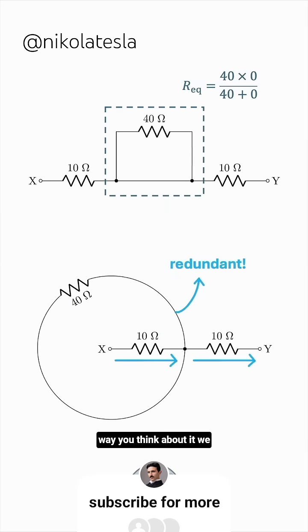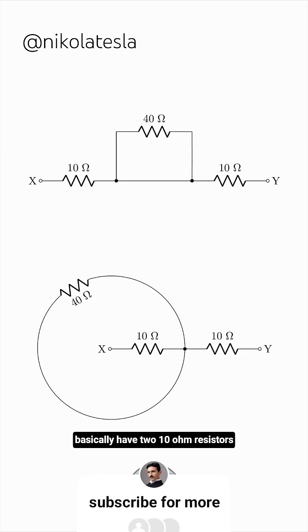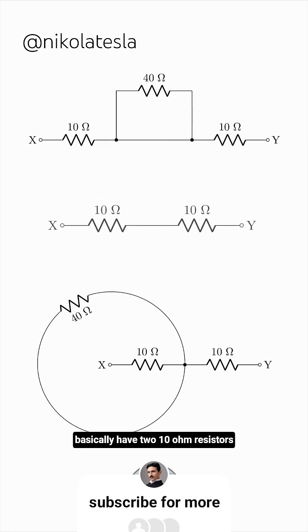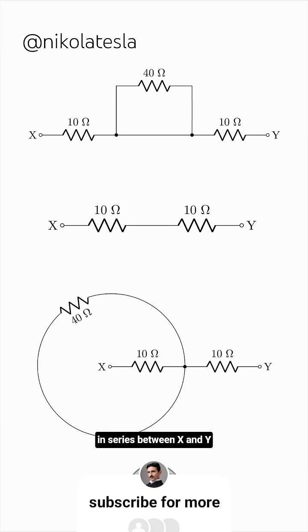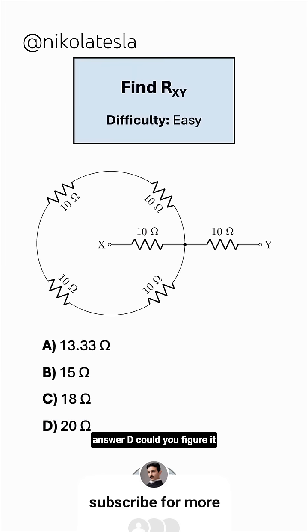No matter which way you think about it, we basically have two 10-ohm resistors in series between X and Y. So, the overall resistance between the two terminals is 10 plus 10, or 20 ohms, making the correct answer D. Could you figure it out?